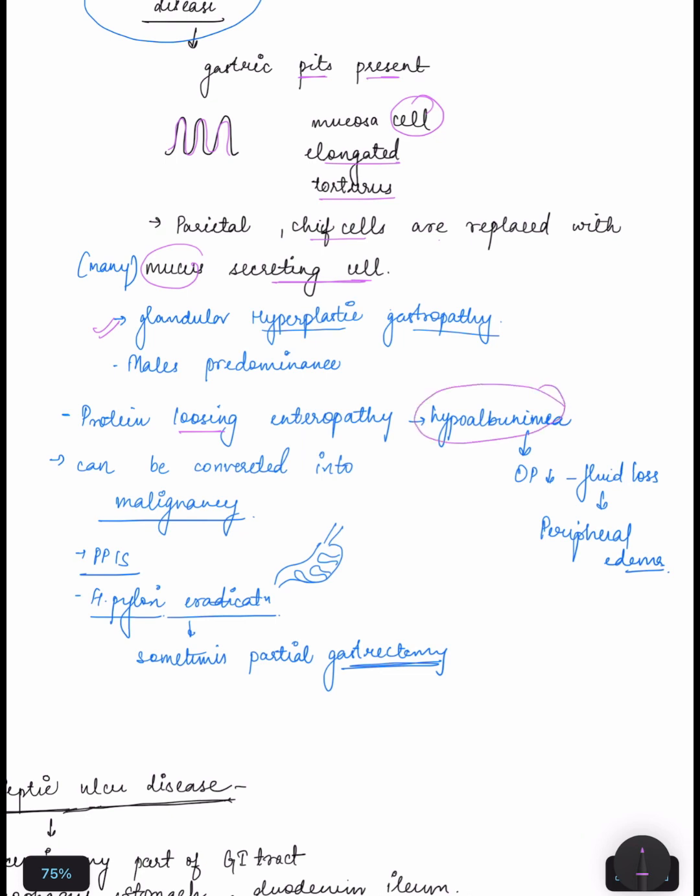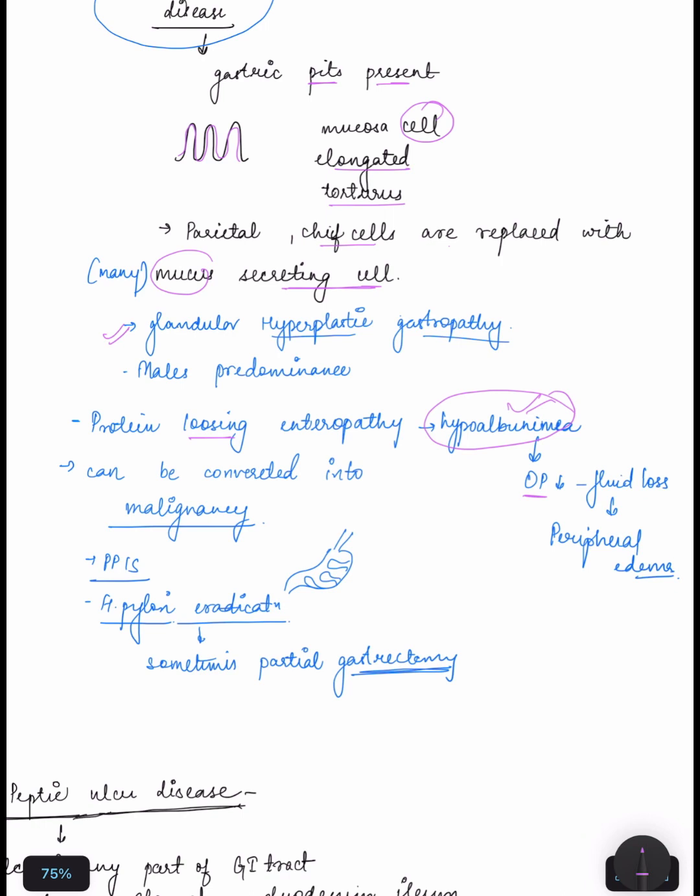In this case, proteins are lost, so protein-losing enteropathy occurs, which will cause hypoalbuminemia. Because proteins are lost, osmotic pressure will be decreased, fluid loss will be there, and peripheral edema occurs. It can be converted into malignancy. We can give PPIs, H. pylori eradication therapy, and sometimes partial gastrectomy.